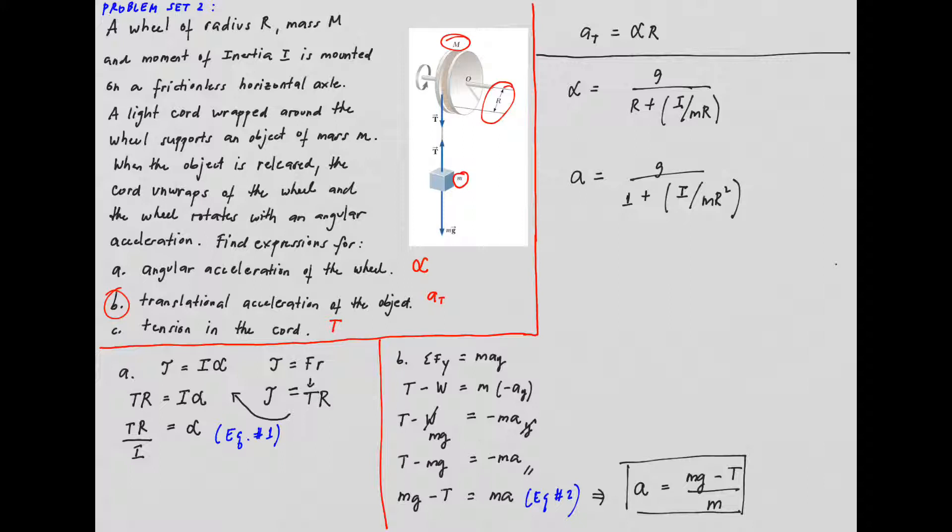And for the tension, we have mg over 1 plus mr squared over I.